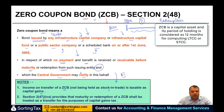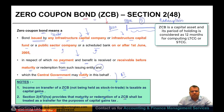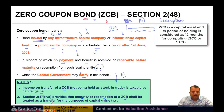Section 2(47)(4a) provides that the maturity or the redemption of a zero-coupon bond shall be treated as a transfer for the purposes of capital gain.